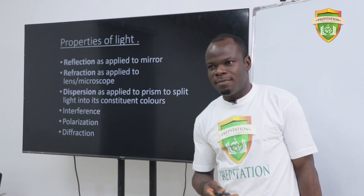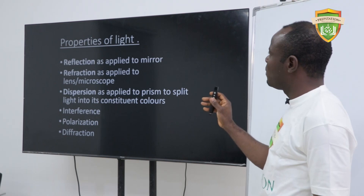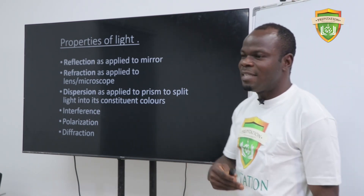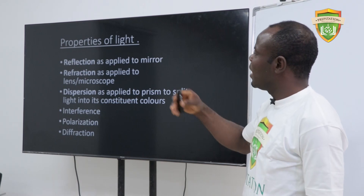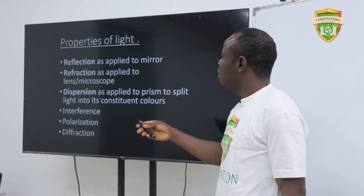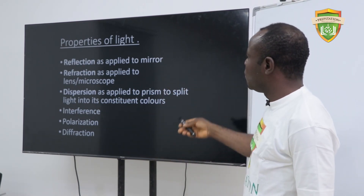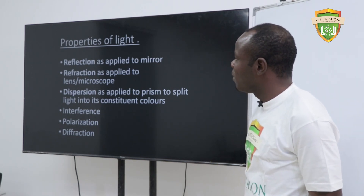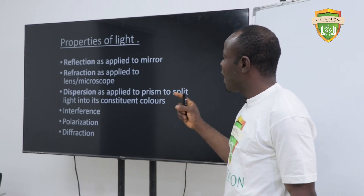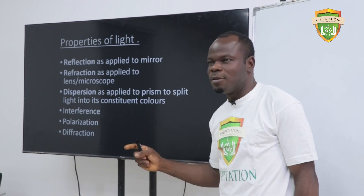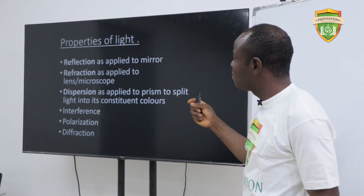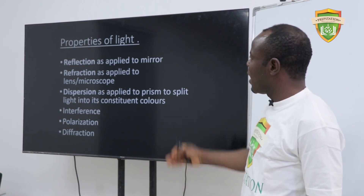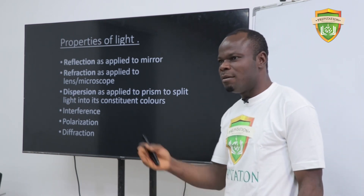Now let's look at the properties of light — how light behaves. One of the properties is that light can be reflected, meaning it can bounce off a surface. That is what we call reflection, and it is applied to mirrors, for example. The second property is refraction, which simply means the bending of light rays. It is applied to lenses and microscopes.